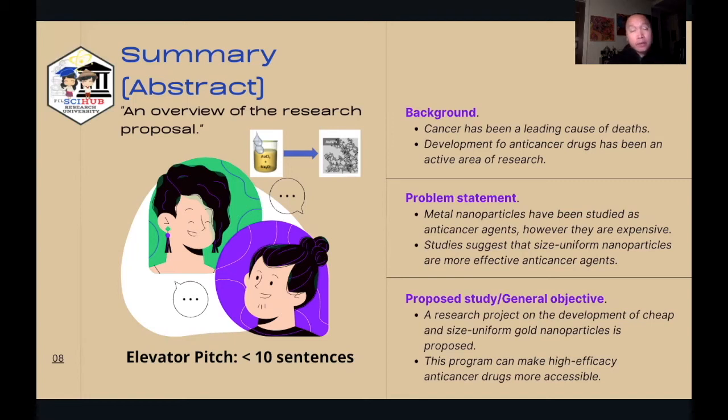The first would be metal nanoparticles have been studied as anti-cancer agents, however they're quite expensive. You have already established a hypothesis and a challenge. Then follow that up with a statement that studies suggest size uniform nanoparticles are more effective anti-cancer agents. With those two sentences, you will have communicated your problem statement, what specific questions you're trying to answer.